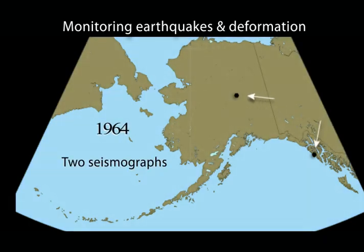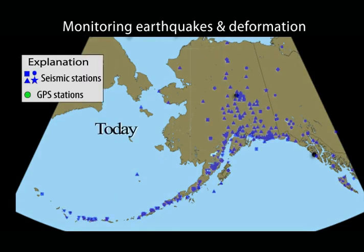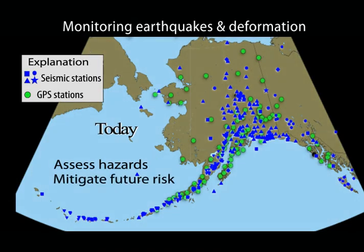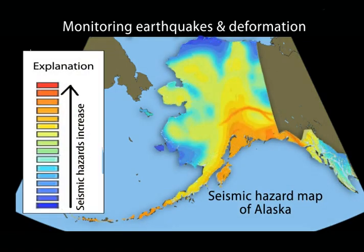Since 1964, when there were only two seismometers in Alaska, monitoring earthquakes and ground deformation to assess hazards and to mitigate future risk has greatly increased. Research that characterizes earthquakes and fault lines serves to reduce the possibility of casualties by better land use planning and constructing earthquake-resistant buildings, allowing us to live more safely in earthquake zones.